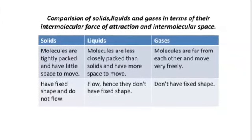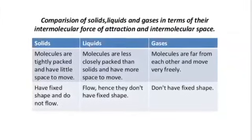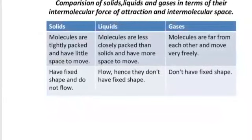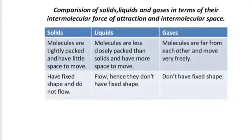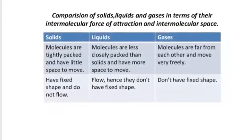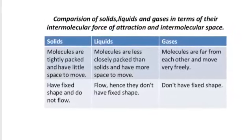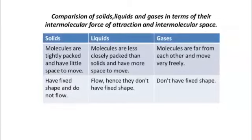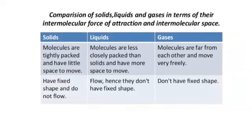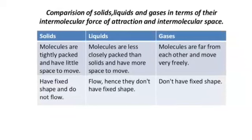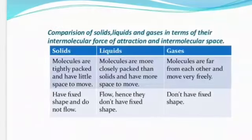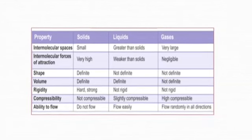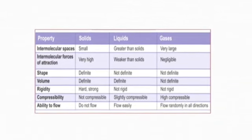Here I have compared solid, liquid and gases in terms of intermolecular force of attraction and intermolecular space. Molecules in a solid are tightly packed with little space to move, so they have fixed shape and do not flow. Molecules in a liquid are less closely packed than solids and have more space to move, so they can flow and don't have fixed shape. Molecules in gases are far from each other and move very freely, so they have neither fixed shape nor fixed volume. Properties like volume, rigidity, compressibility, and ability to flow are a result of intermolecular space and intermolecular force of attraction.